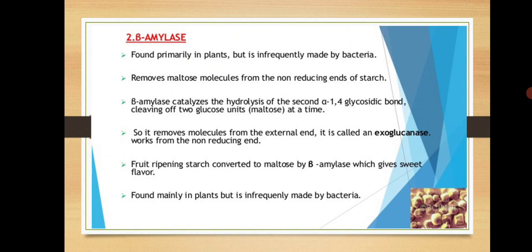Beta amylase is a specific enzyme and an exo amylase because it cuts at the end — at the non-reducing end of the starch chain. Beta amylase is found in plants but is infrequently made by bacteria. After cutting, two glucose units are released, which are called maltose. So beta amylase removes maltose from the non-reducing end of the starch chain.